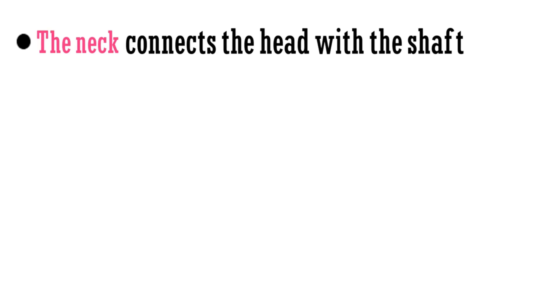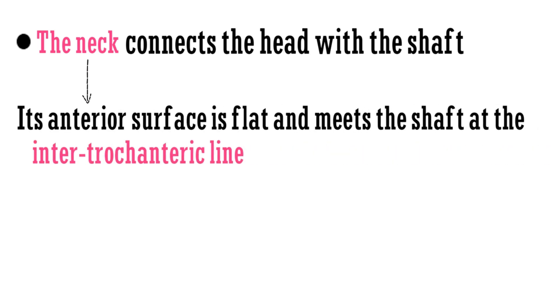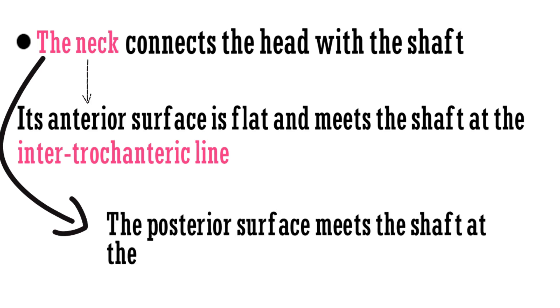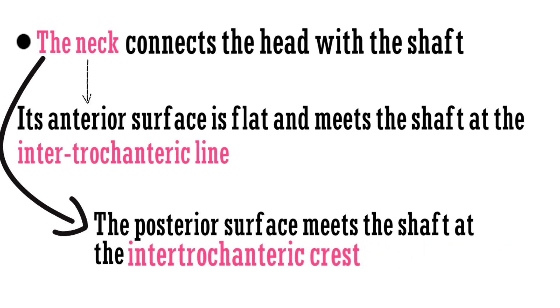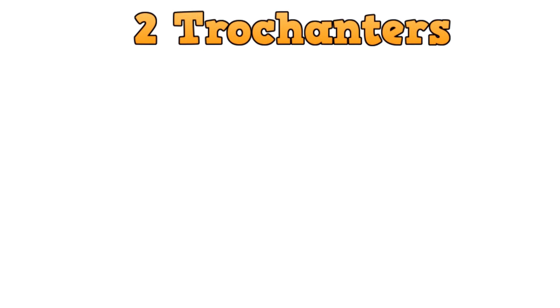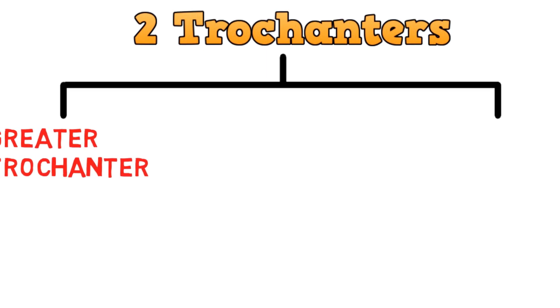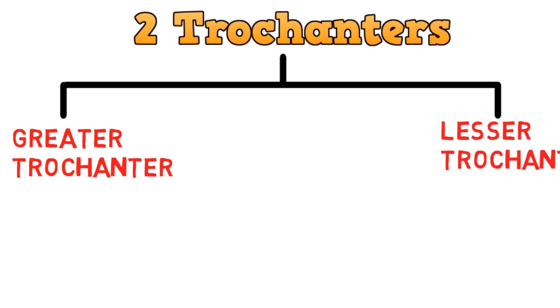The neck connects the head with the shaft. Its anterior surface is flat and meets the shaft at the intertrochanteric line. The posterior surface meets the shaft at the intertrochanteric crest. There are two trochanters present in the proximal end, known as the greater trochanter and lesser trochanter.